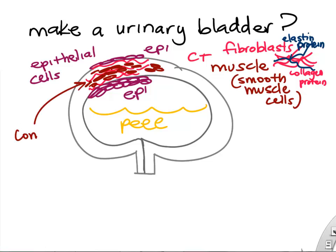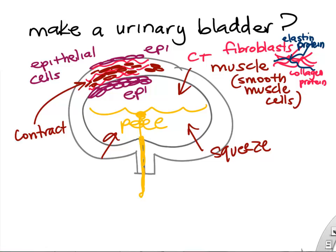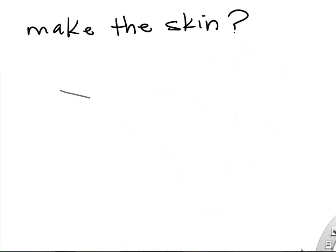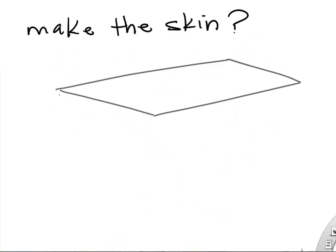Connective tissue has lots of protein fibers — elastin and collagen. Smooth muscle cells, when they contract, make the bladder squeeze and push urine out. That's the bladder. Again, the four tissue types: we'd even have nervous tissue in there as well.